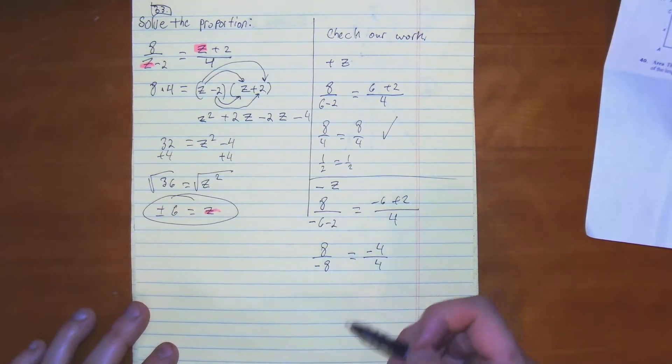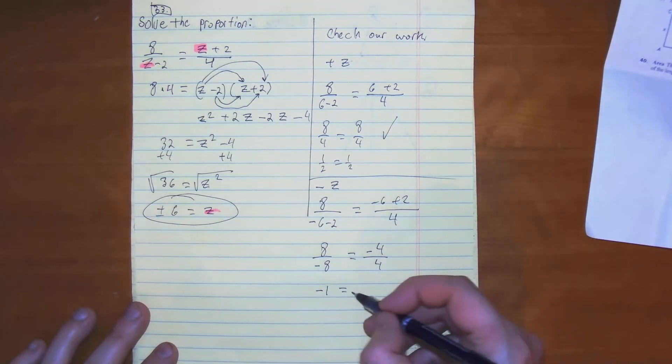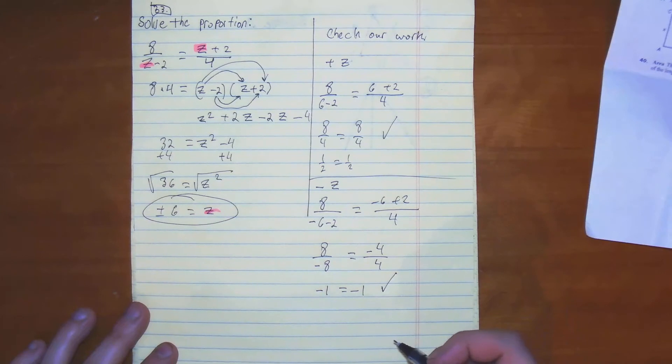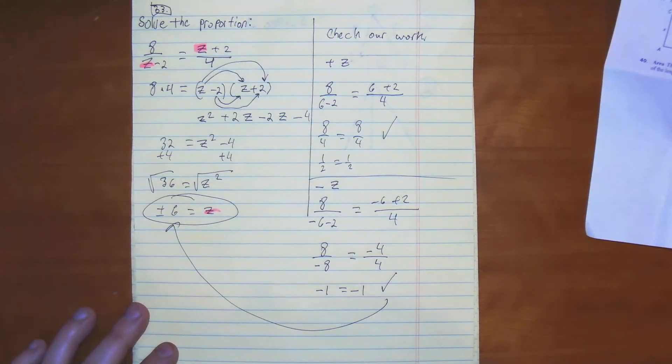From here, negative 8 goes into 8 negative 1 time, and 4 goes into negative 4 negative 1 time. Therefore, our two solutions are plus and minus 6.